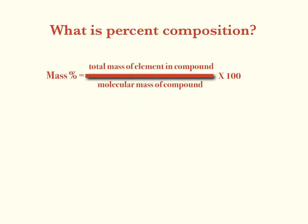Well, first of all, percent composition is also called mass percent, and it's the total mass of the element in a compound over the molecular mass of that compound times 100.